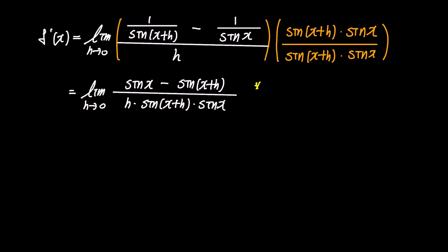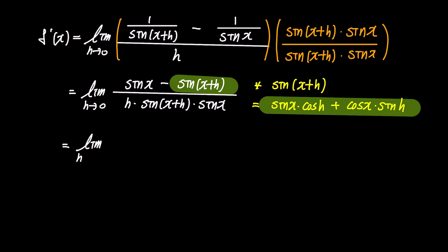The sine term in the numerator, sin x plus h, can be expanded using the compound angle formula for trigonometric functions as sin x times cosine h plus cos x times sin h. Substituting this result into the numerator, we get the expression limit of sin x minus sin x times cosine h plus cos x times sin h, over h times sin x plus h times sin x.